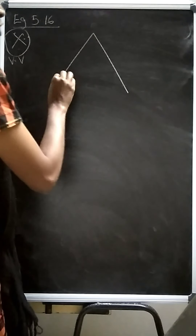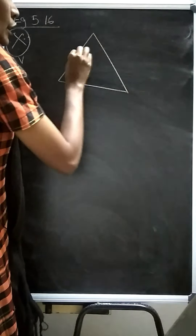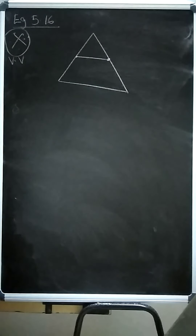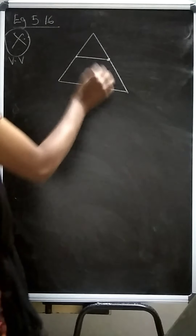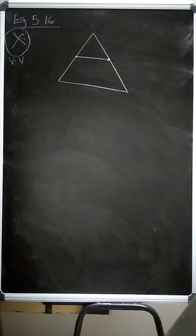Prove analytically that the line segment joining the midpoints of two sides of a triangle is parallel to the third side and is equal to half of its length.